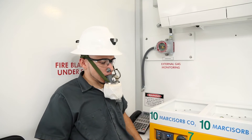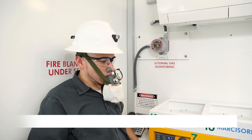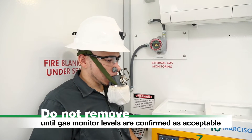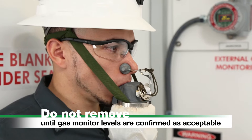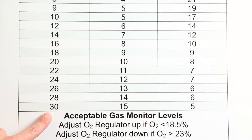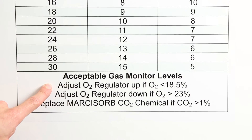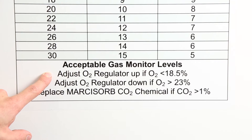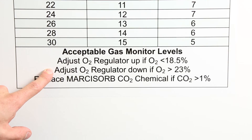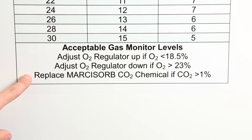If wearing an emergency breathing apparatus (EBA), do not remove until gas monitor levels are confirmed as acceptable. Refer to the bottom of the life support settings table on the safe haven wall for a guide on reading alarms and ensuring that breathing air quality is maintained.